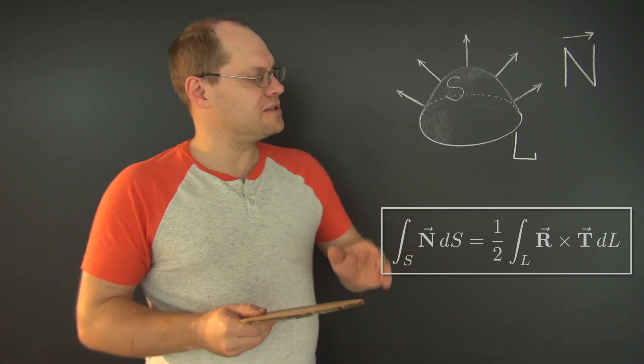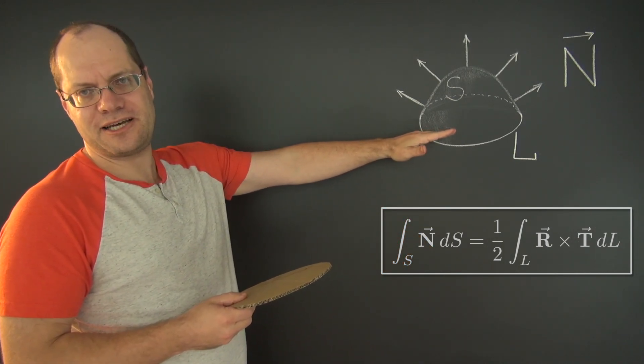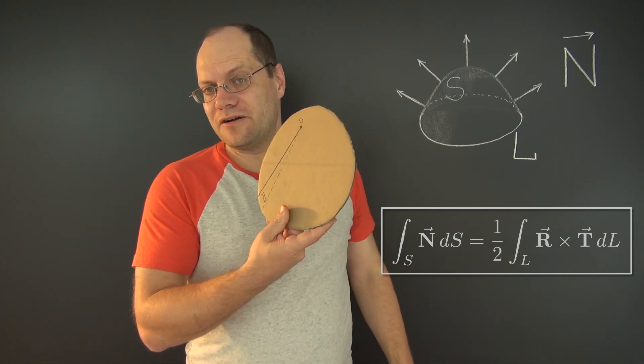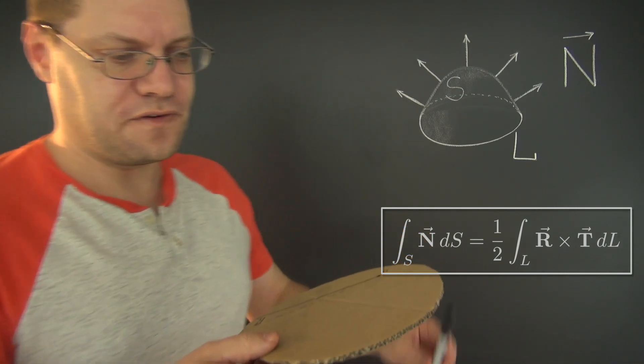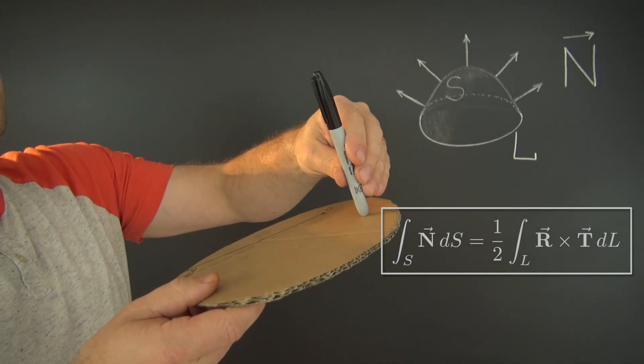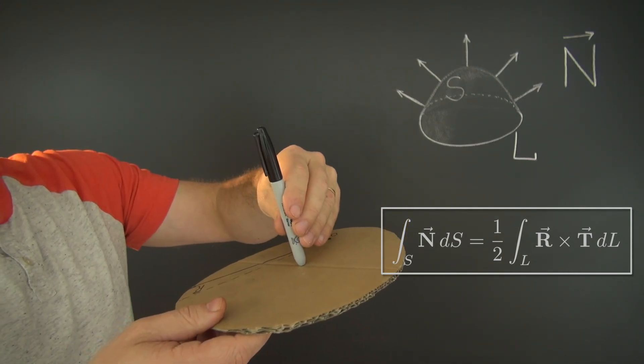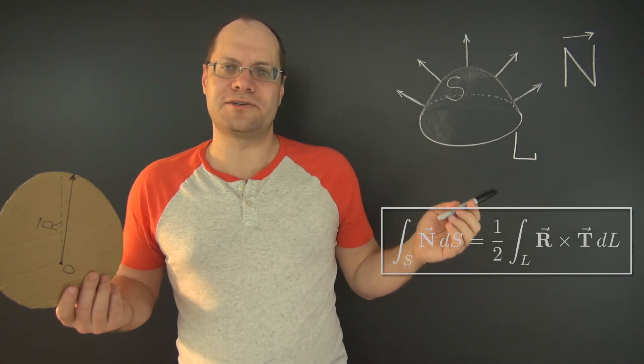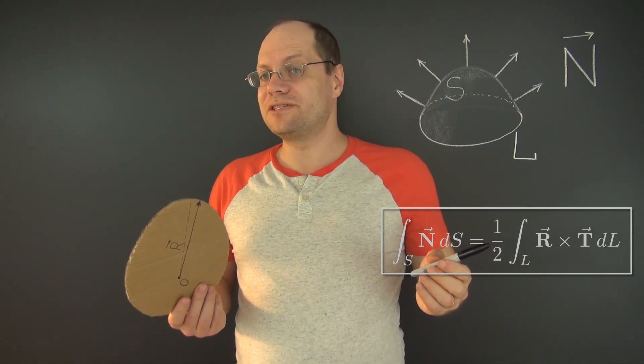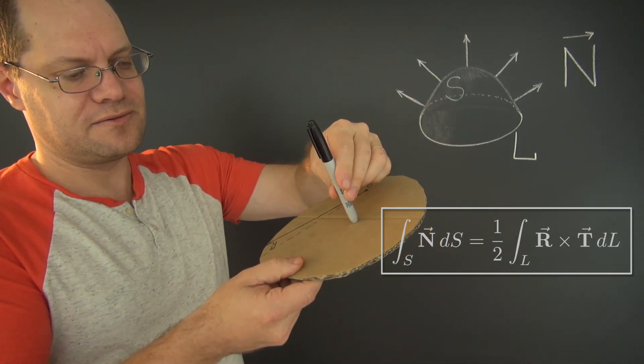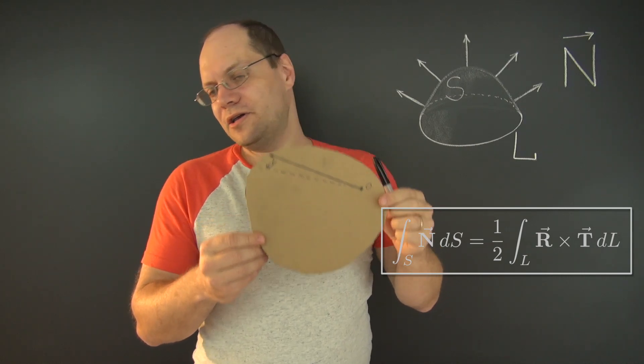First, let's consider the special case of a flat surface patch S, like this shape right here. Now, on a flat surface, the normal points in the same direction at all points. So when integrating the normal, we're integrating a constant. And the result is, of course, that constant times the total area of the patch.